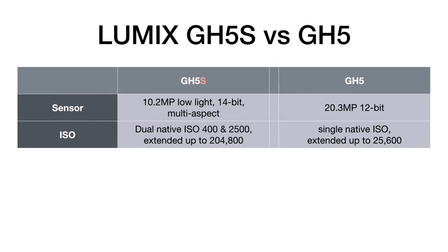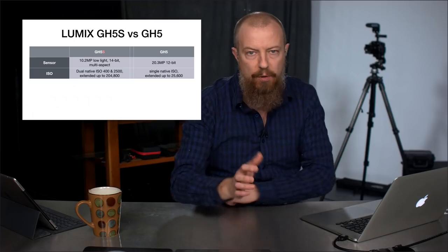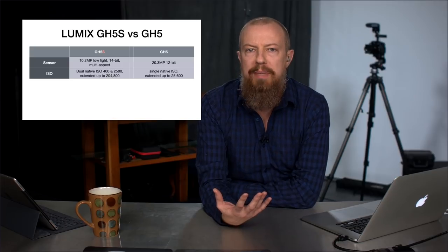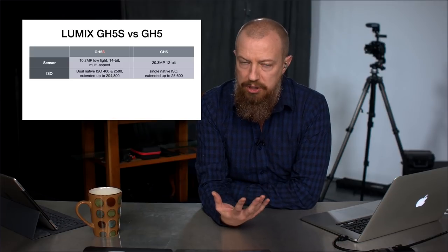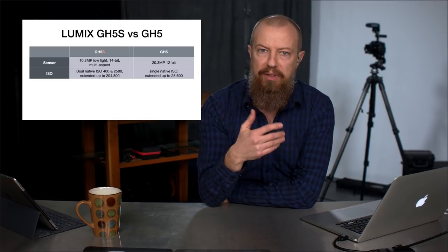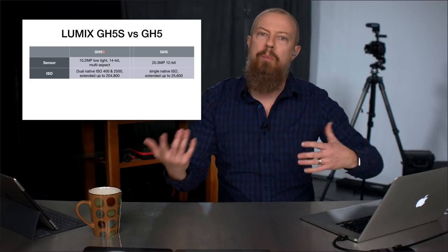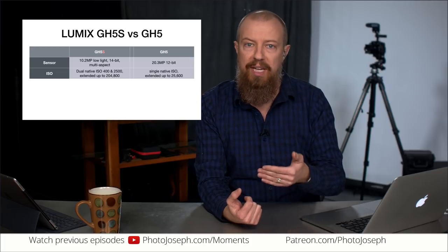Next up is the dual native ISO — a really big deal, especially for those shooting in low-light situations. Dual native ISO means it shoots natively at ISO 400 and ISO 2500. Shooting at your native ISO means you get the best image quality possible — you're not gaining up the sensor or telling it to absorb more light than it's capable of. It's a native view of the sensor, the best possible image quality. Being able to switch between ISO 400 and 2500 natively is phenomenal.